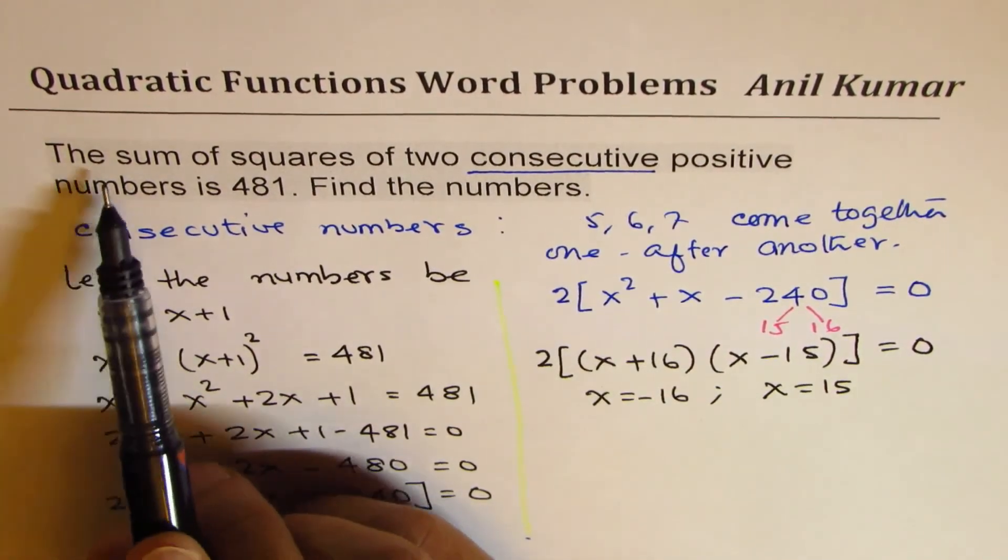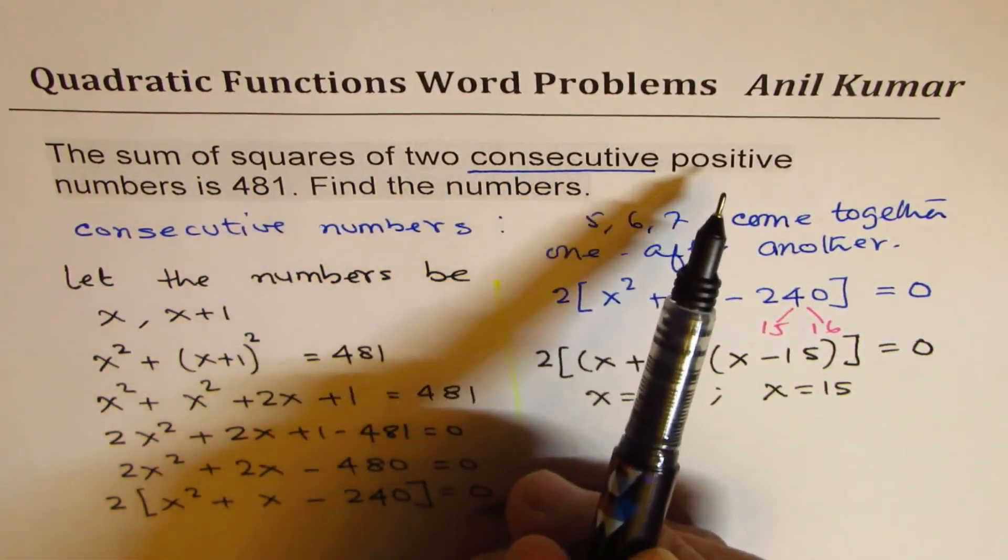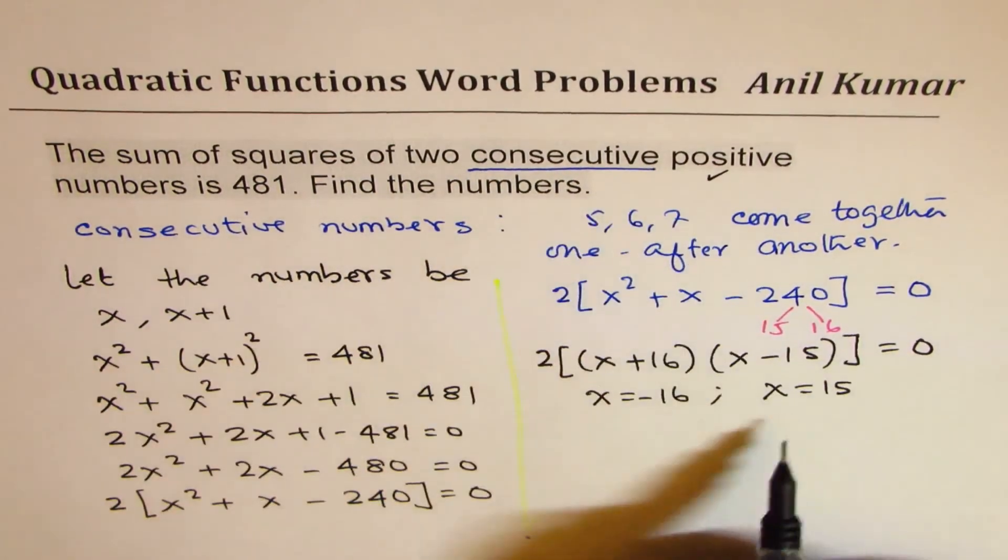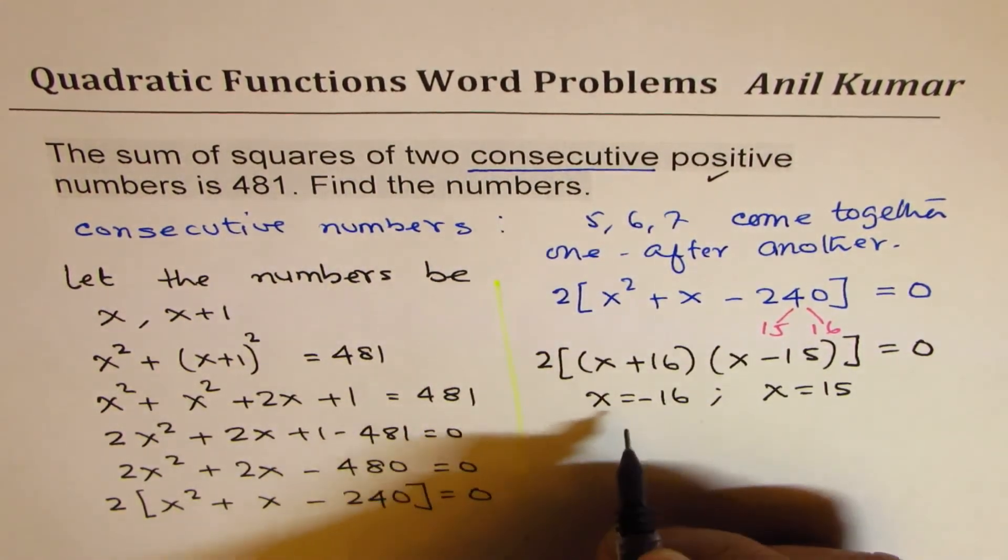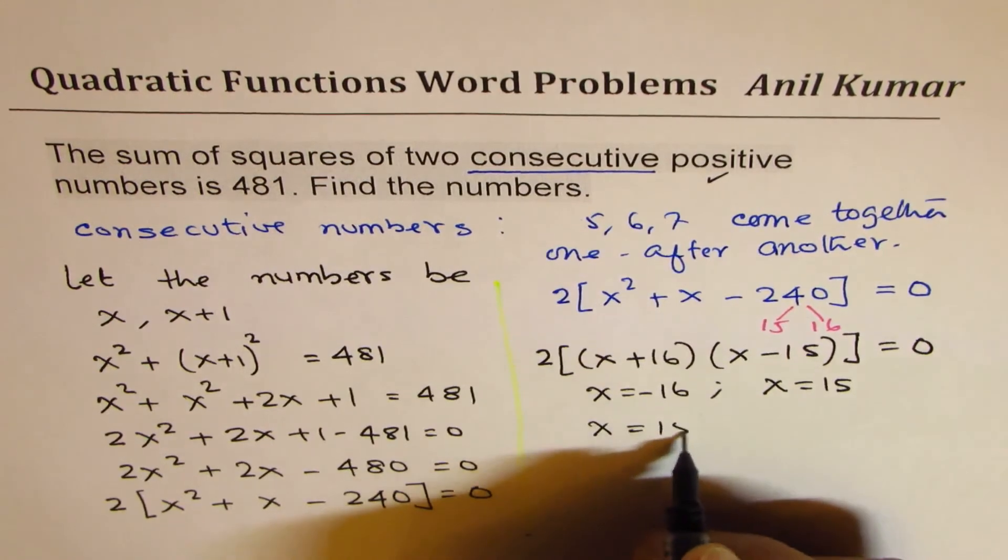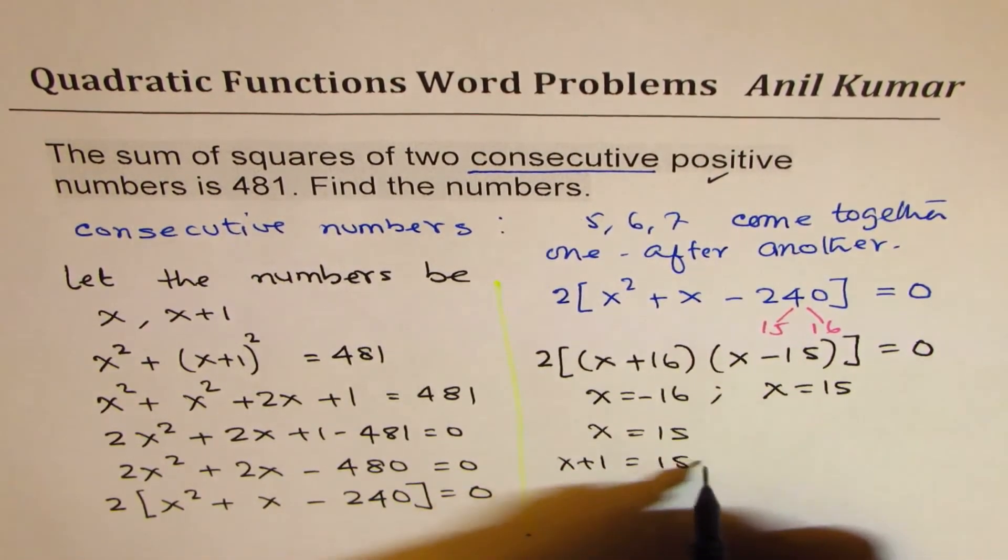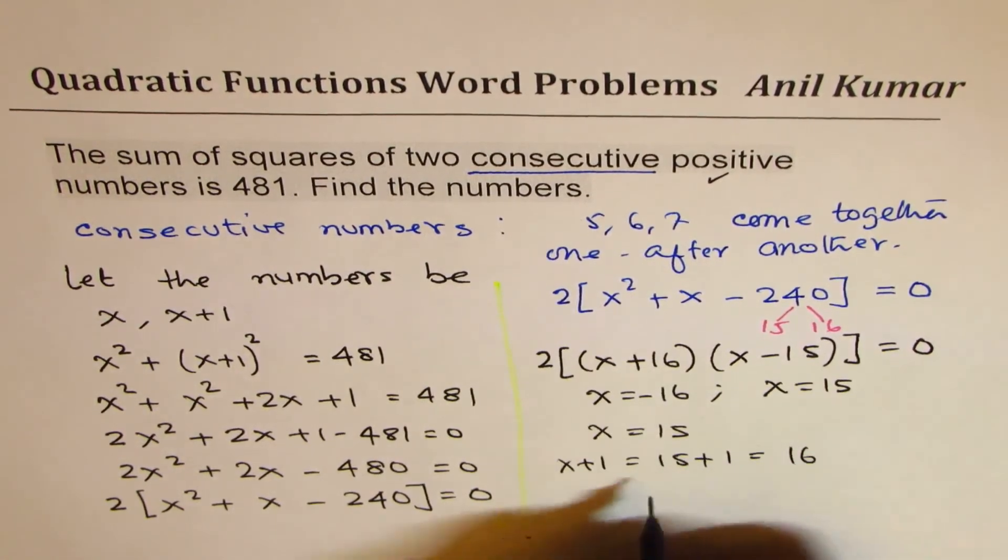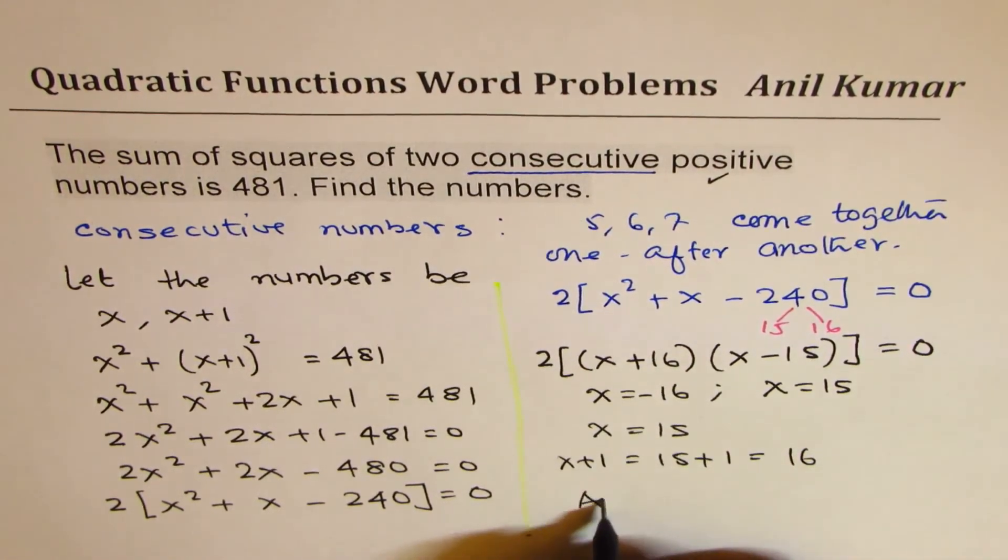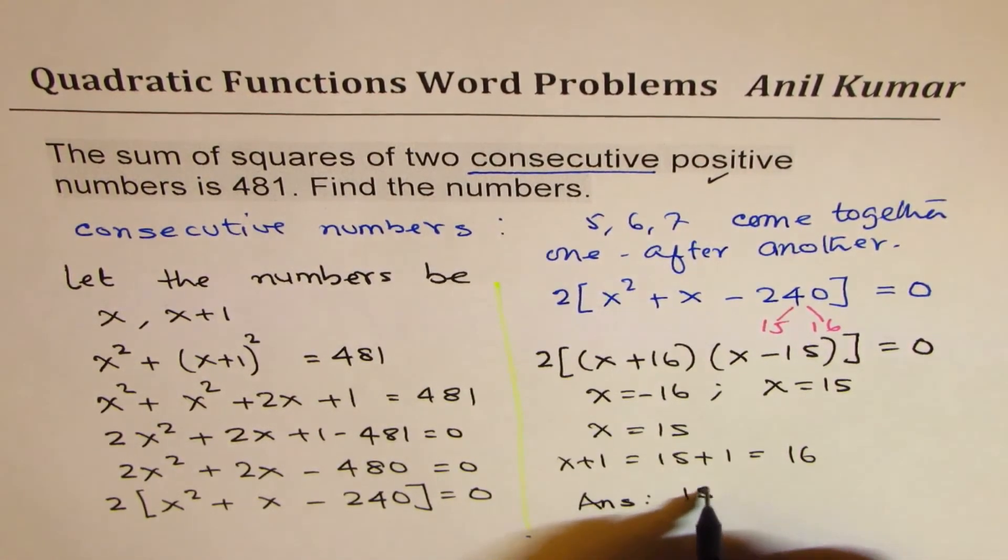We are looking for sum of squares of two consecutive positive numbers, so we'll take 15. We say x equals 15. The other number is x plus 1, it should be 15 plus 1, which is 16, and they are consecutive numbers. So our answer is 15 and 16.